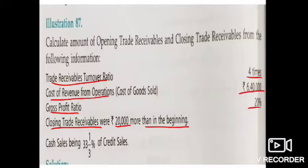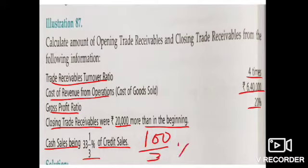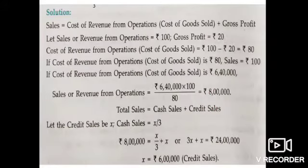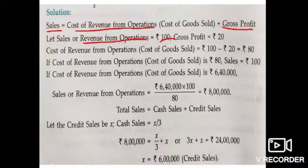Cost of revenue from operation is ₹6,40,000, gross profit ratio is 20%, closing trade receivable is ₹20,000 more than opening trade receivable, and cash sale is 33⅓% (i.e., 1/3) of credit sale. Similar to illustration 86, first we find revenue from operation.